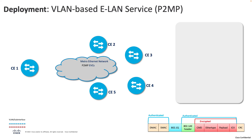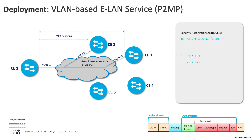Another very common deployment is the VLAN-based E-LAN service, which is a point-to-multipoint Layer 2 VPN service enabling any-to-any connectivity. This type of service is commonly implemented using VLAN tagging, which creates a virtual LAN spanning multiple customer locations over a shared MPLS or shared Ethernet network.